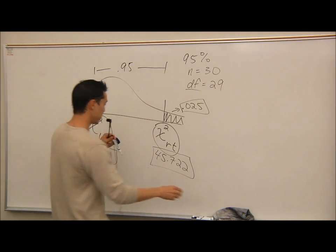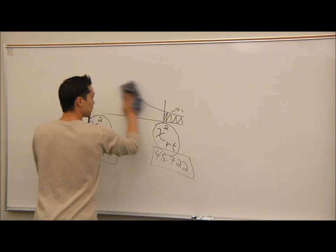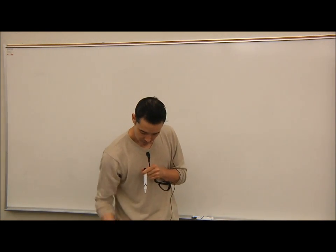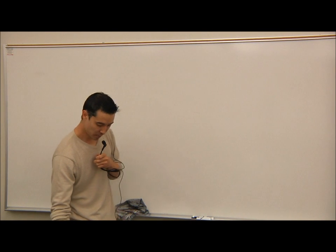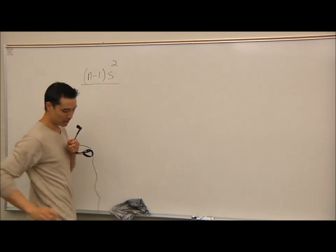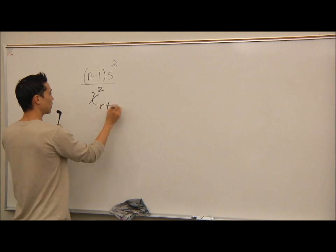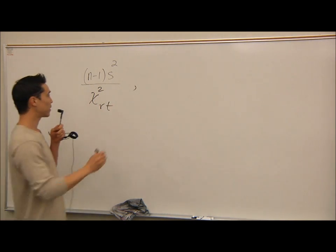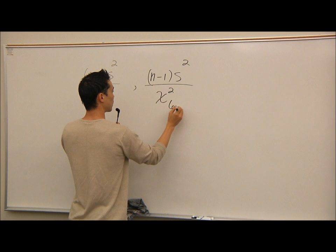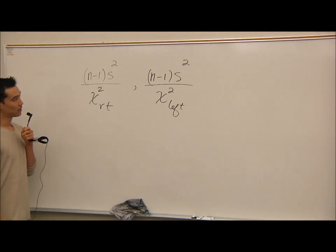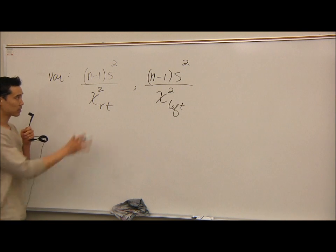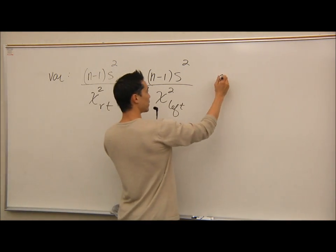Now let's put up the formula for the variance and standard deviation confidence interval. The confidence interval for variance is: lower bound = (n−1)·s² / χ²_right, upper bound = (n−1)·s² / χ²_left. The degrees of freedom is n minus 1.